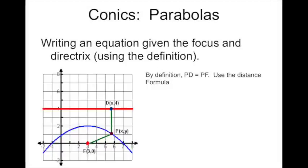Now I want to write an equation given the focus and the directrix by using the definition. We already have a way to write equations for parabolas that are functions, but I also want to know how to write equations for all the non-function parabolas. By definition, the distance between the focus and a point on the parabola must equal the distance between that point and the directrix. So if P is any point on the parabola, F is the focus, and D is any point on the directrix, then PD must equal PF. I can use the distance formula to generate the equation.